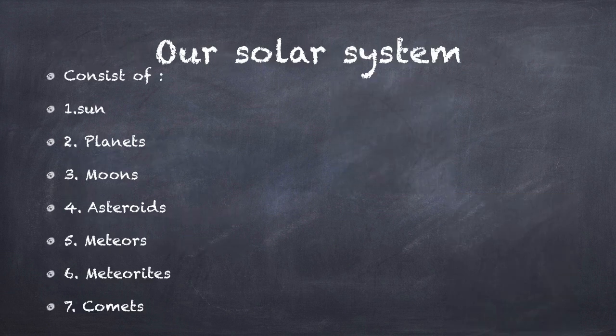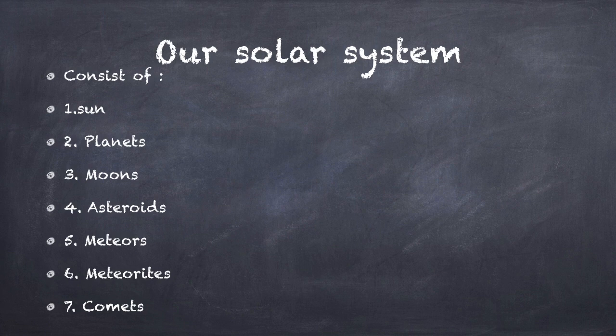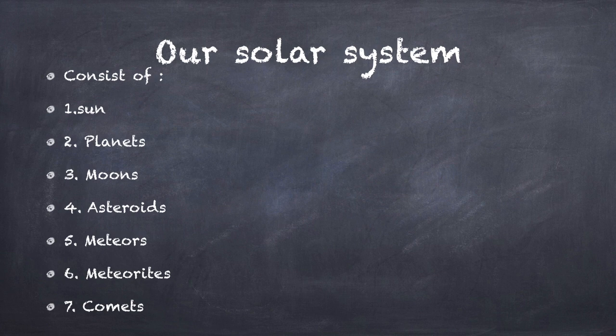The solar system consists of the Sun, planets, moons, asteroids, meteors, meteorites, and comets. The Sun is the star of our solar system. It is the biggest body in the solar system. It lies in the center of the solar system and the other bodies revolve around it.